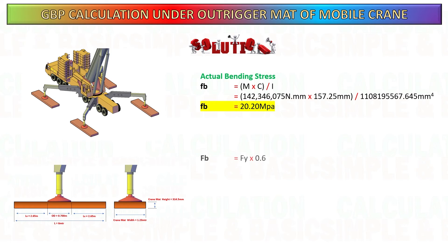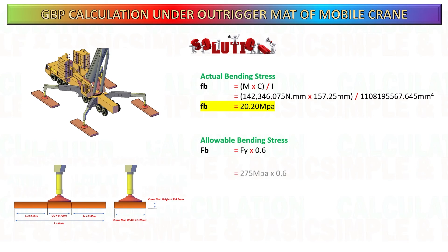Next, calculate the allowable bending stress — this value depends on the grade of your steel. For this example, the grade of steel we are using is 275 megapascals.